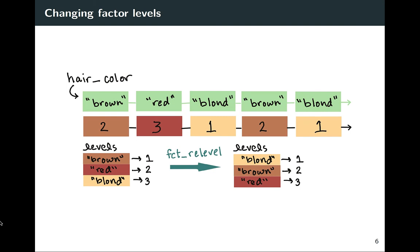We'll work a lot more with this as we go later in the class. But I did want you to start getting this idea of why, when you plot an X or Y axis that maps to a column with the factor class, it picks the order that it picks — and why you can't just change it using something in ggplot itself. You really need to change the way R stores that column in the factor class.